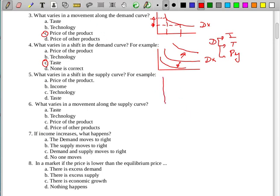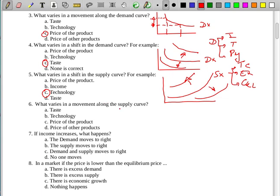You remember the demand moves or shifts right or left when income, taste or price of another product varies. For this question, the correct answer is C. Number five: what is in a shift of supply curve? This is the situation in the supply. Supply moves right or left when varies technology, expectations, or laboral cost. In this case, the correct is C.